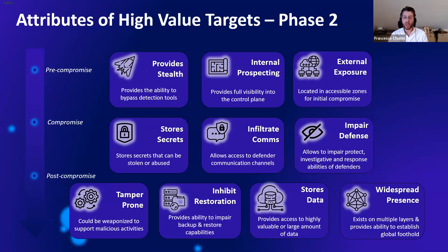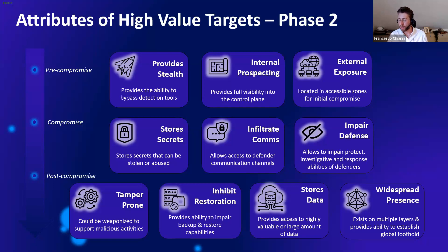From our experience, three of these attributes are already very well categorized and addressed in most companies. One is external exposure — when something is externally exposed, organizations protect it strongly with additional governance and extra controls. The second is assets that store secrets: directories, privileged access management tools, Java key stores — these are already well-protected because they store secrets. Third is assets that store data — databases and structured data tend to land on critical lists. But the other attributes? Not so much. It depends on the experience of the security team and their ability to challenge the business and those doing business continuity.